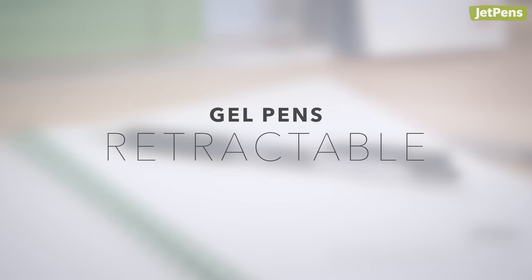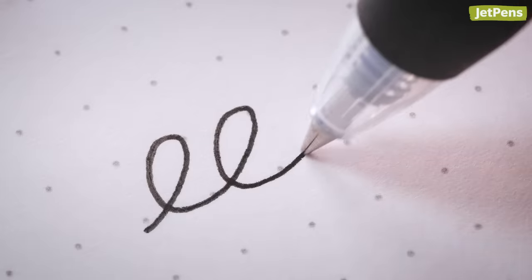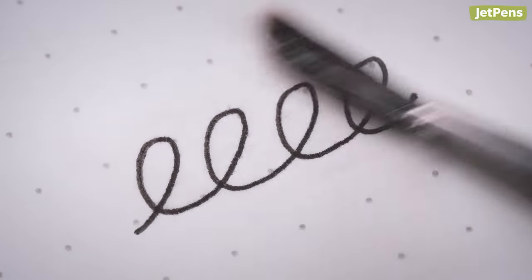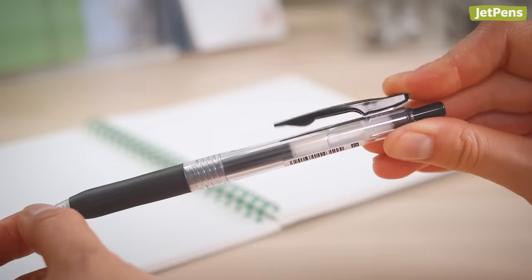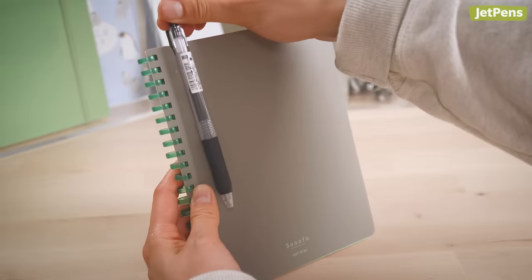Retractable. The Zebra Sarasa Clip is another popular gel pen. Just like the Signo, it flows super smoothly, and its ink is water- and fade-resistant. Its spring-loaded clip is iconic. You can attach it to pockets, notebook covers, and more.